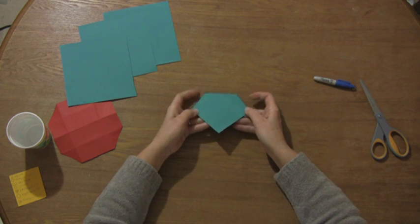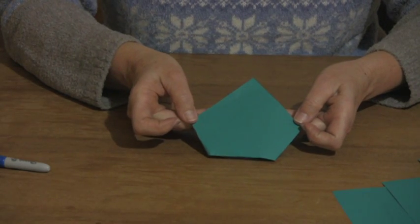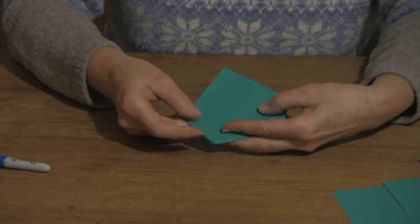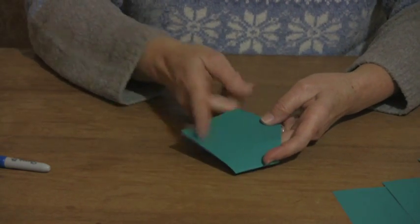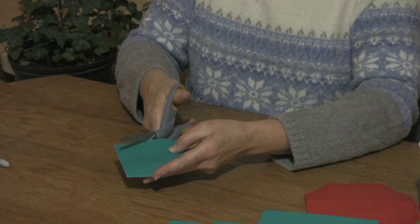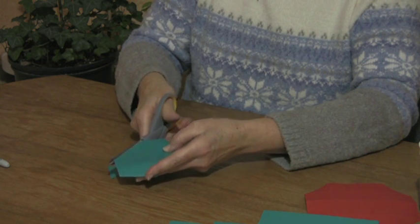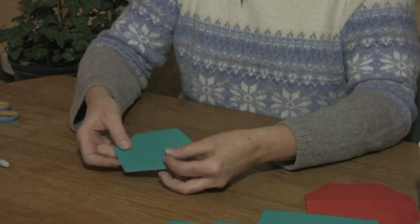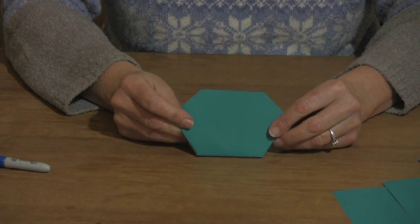And you would have your pentagon. Now from your pentagon you can simply take and cut off this top piece here, running it parallel to the bottom piece. And here would go your hexagon.